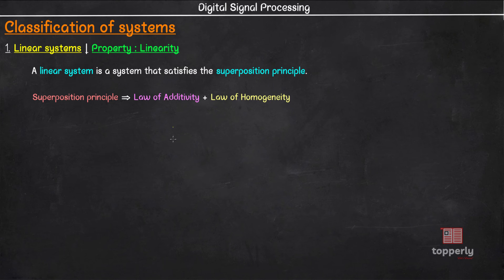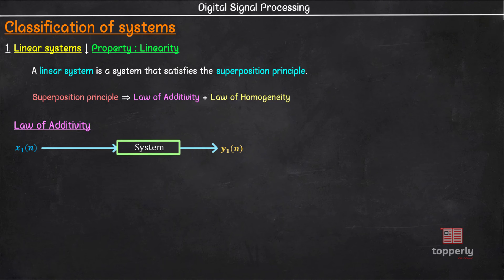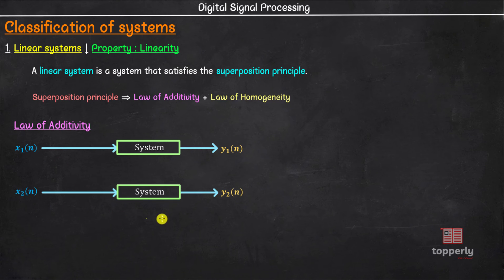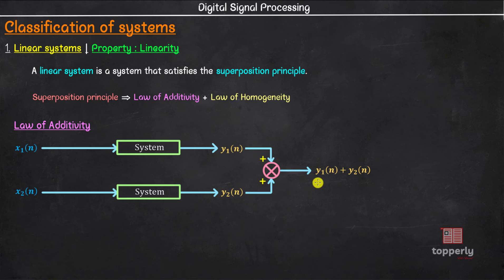Let us study about the law of additivity first. Consider a discrete time system. When the input to the system is x1(n), the output to the system is y1(n). That is, y1(n) is the output obtained when the input is x1(n). Now we will change the input. For the same discrete time system, instead of x1(n) we will give an input x2(n). The corresponding output will be y2(n). Now we will add the outputs y1(n) and y2(n) to get y1(n) plus y2(n). This can be considered as step 1 in checking the law of additivity.